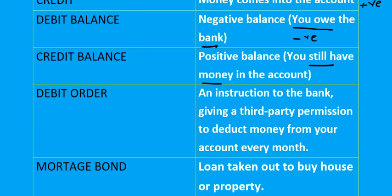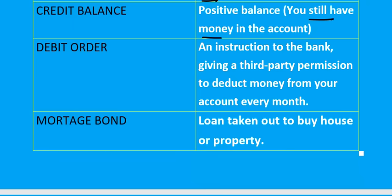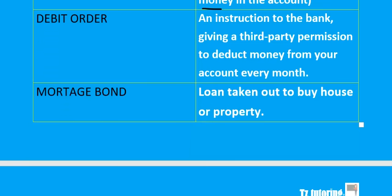Another definition usually asked in tests or exams is that of a debit order. A debit order is an instruction to the bank giving a third party permission to deduct money from your account every month. For example, if you have an account with Telkom and your debit order is R250, you instruct your bank to pay that amount to Telkom every month.